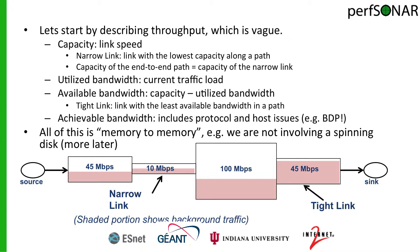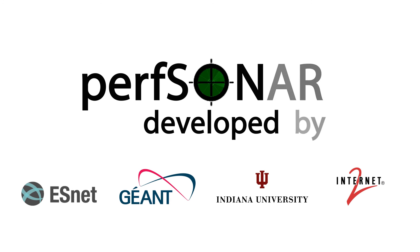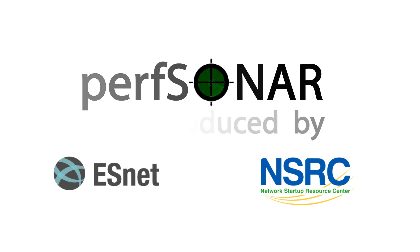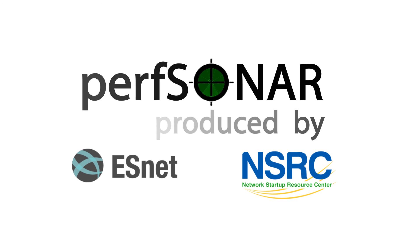If we were to run the tool, we would get back an answer reflecting that number. If these links became less utilized or an upgrade was performed, we would see different numbers. We should also note that this is all memory-to-memory when doing these tests — we're using the main memory of the source and the sink, not a disk, because disk access can add additional delay into the path. Using these terms, we can use a tool like BWCTL to evaluate the bandwidth of a network.